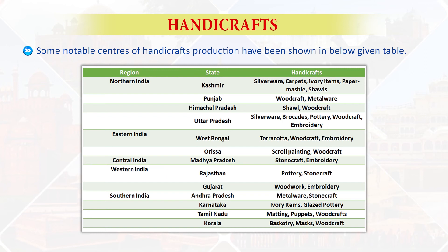In the Eastern region, West Bengal is a centre for terracotta, woodcraft and embroidery; Odisha is famous for scroll painting and woodcraft. In Central India, Madhya Pradesh is famous for stone craft and embroidery. In Western India, Rajasthan is a centre for pottery and stone craft; Gujarat for woodwork and embroidery. In the Southern region, Andhra Pradesh is a centre for metalware and stone craft; Karnataka for ivory items and glazed pottery; Tamil Nadu for matting, puppets and woodcrafts; and Kerala for basketry, masks and woodcrafts.